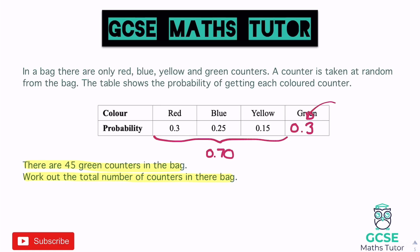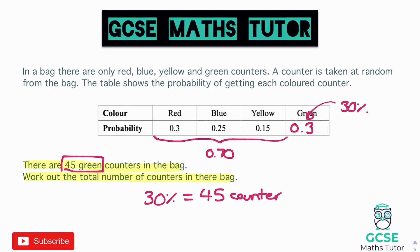So 30% of the counters are green, and we're told there are 45 green counters. That means 30% equals 45 counters. We need to turn 30% back into 100% — this is like a reverse percentage. We can't just multiply by 2 or 3 to get to 100%, so we break it down: divide 30% by 3 to get 10%.